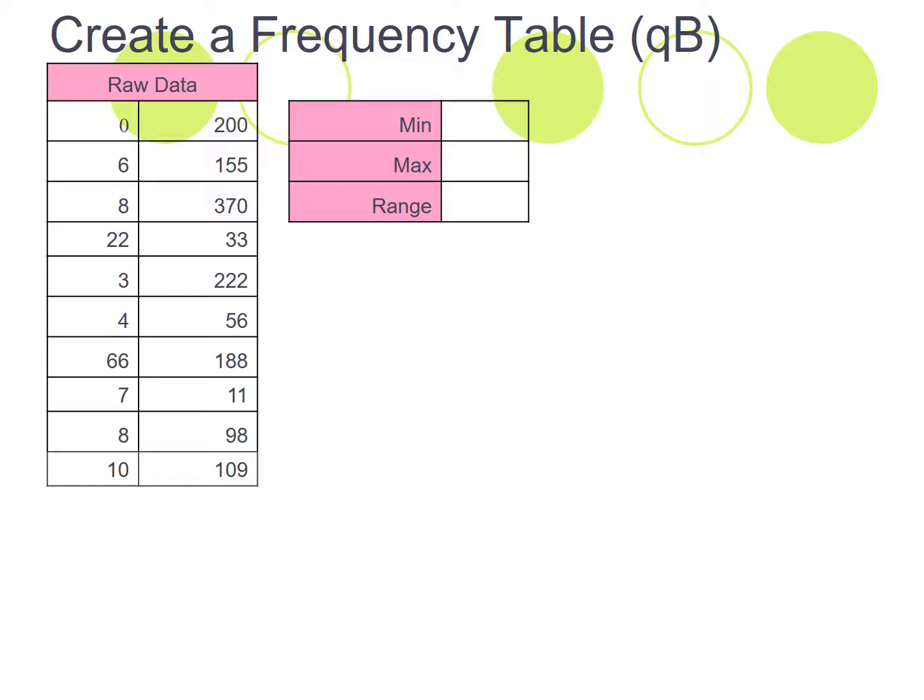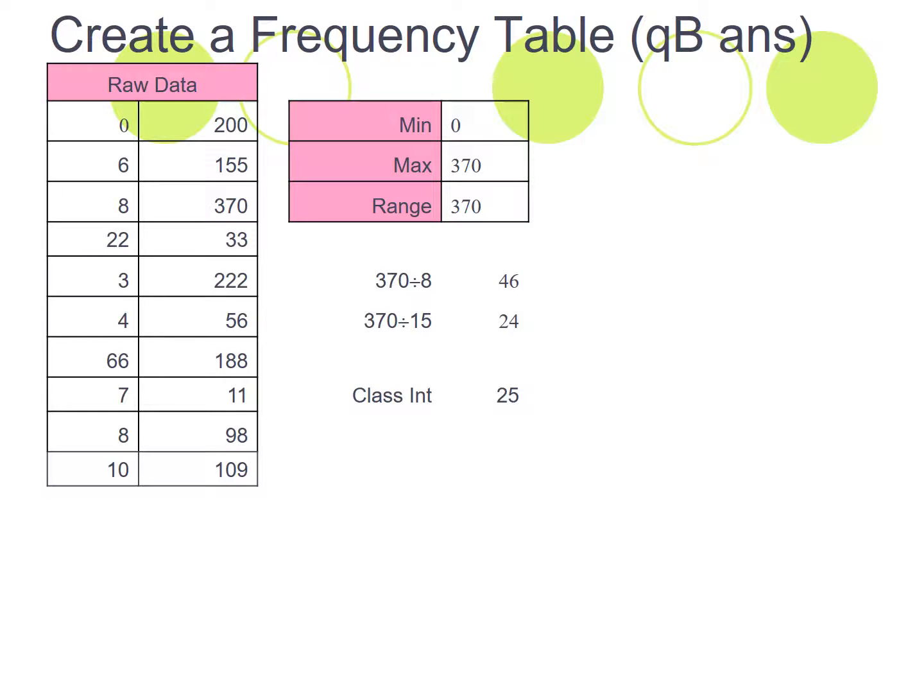Let's go through this one here. Hit pause and try it yourself. So your maximum was, your minimum was 0. Your maximum was 370. So 370 minus 0 is 370. So your range is 370. 370 divided by 8 gives you 46. 370 divided by 15 gave you 24. A nice round number between 24 and 46 is 25. 20 would be wrong because 20 is lower here. Sometimes people go under. So between 24 and 46. So 24, 25, 26, 27, the whole way up to 46. 25 is the obvious number to go with there.